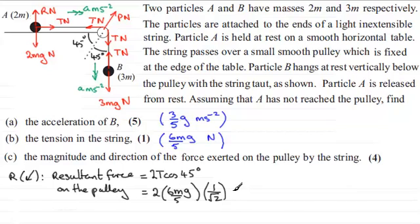Now if we simplify this, root 2 goes into the 2, root 2 times. So you've got root 2 times 6mg over 5. And that would look better as 6 root 2 mg over 5. And that would be measured in newtons.